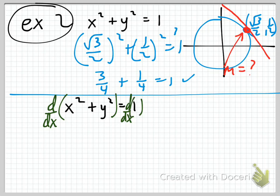The derivative of x squared is 2x — no problem. Now for the y squared term, let's write it as y of x squared to remind us that we have to use the chain rule here.